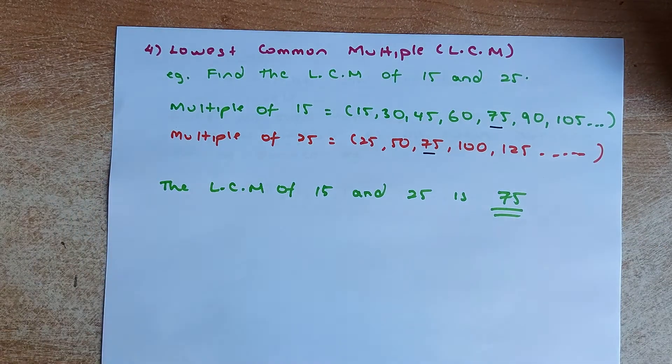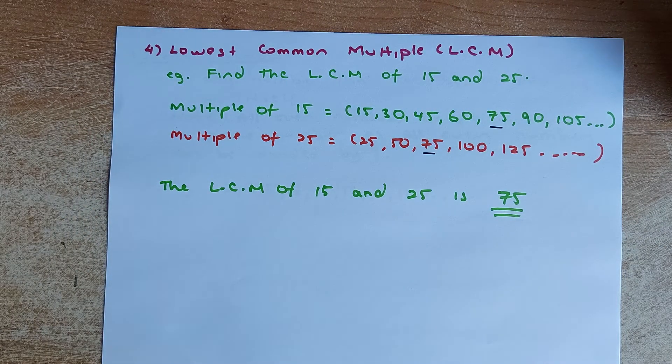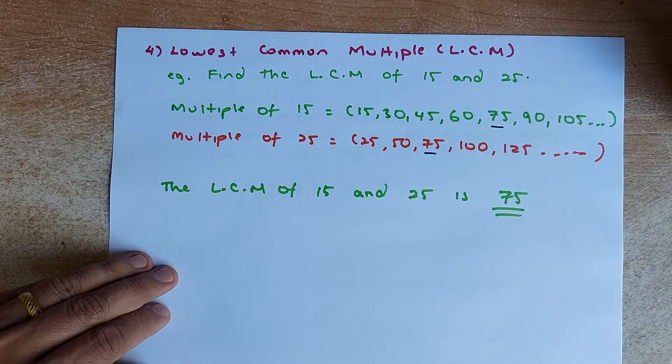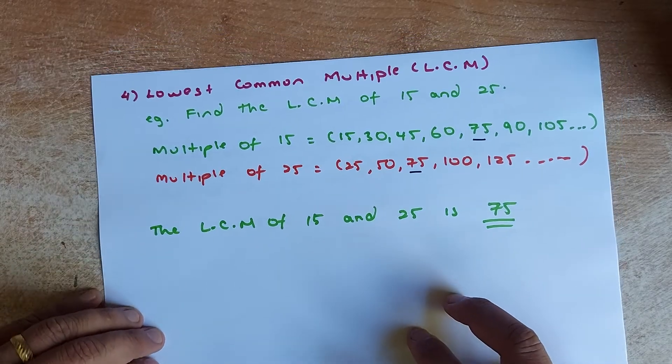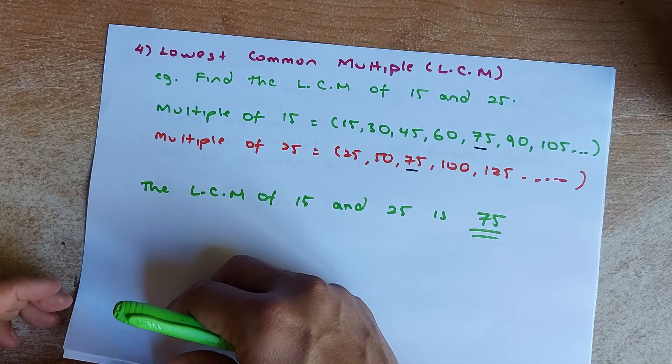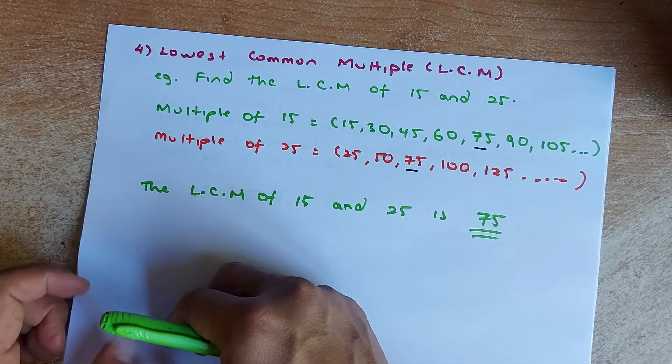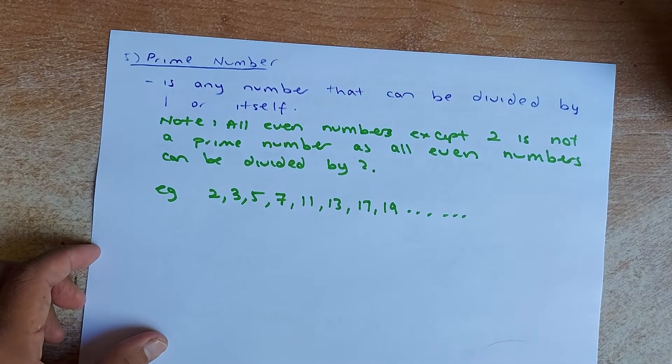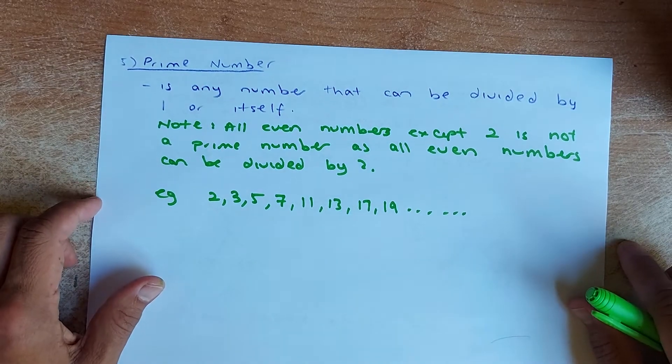So 75 will be the lowest common multiple of 15 and 25. That's easy, isn't it? Good. So now we are going to do prime numbers.